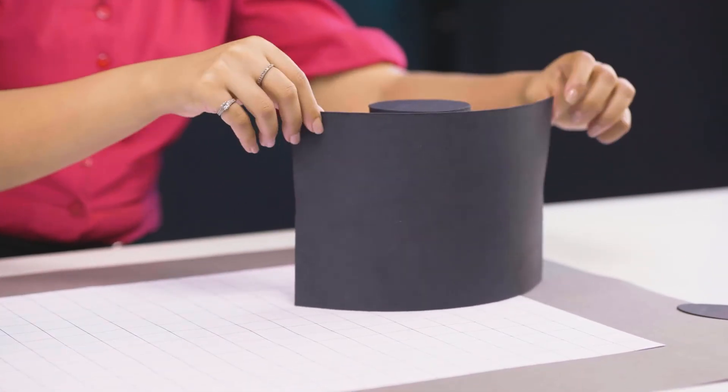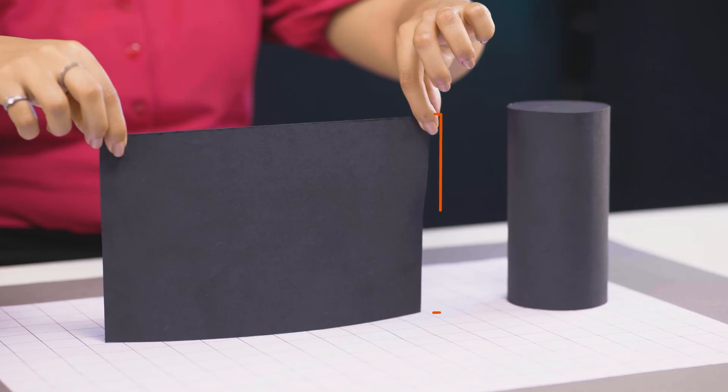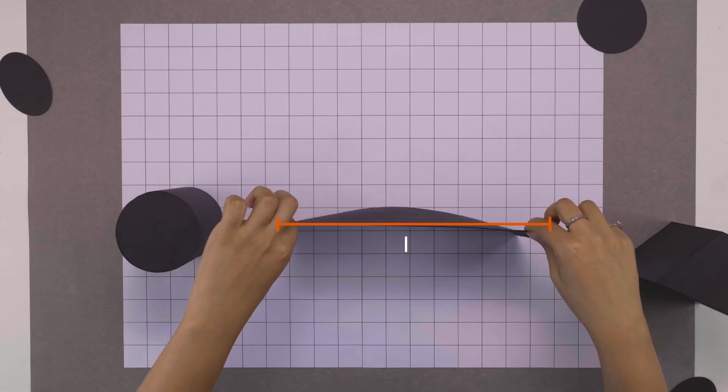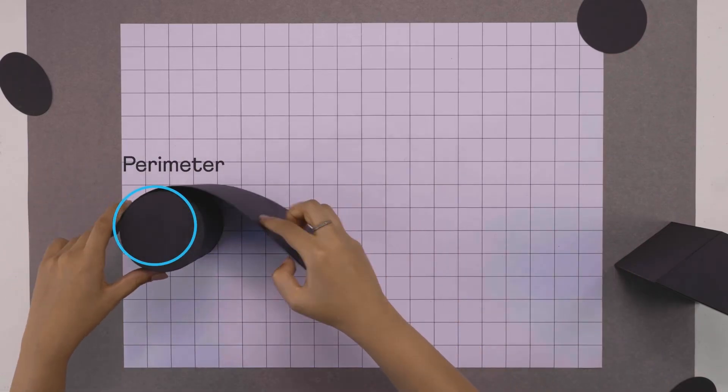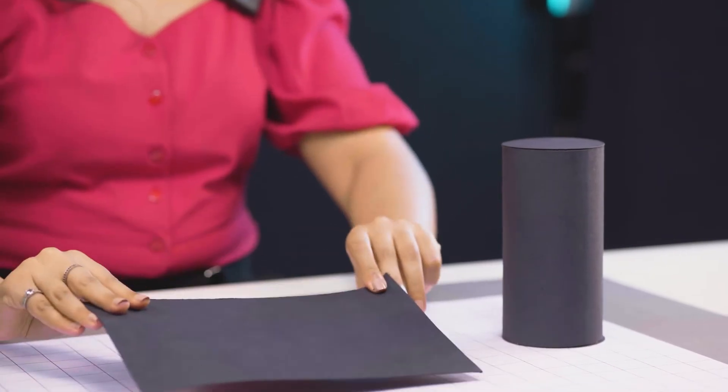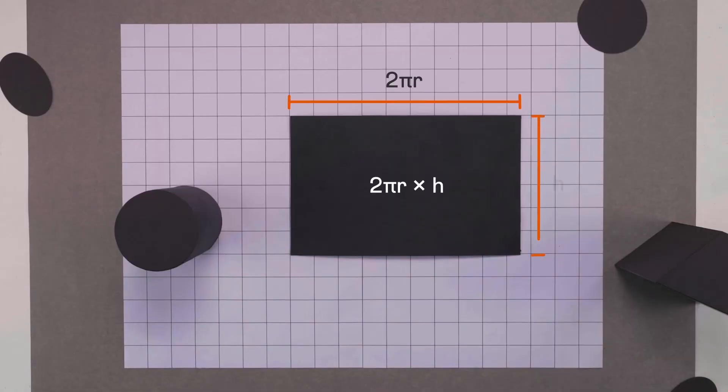If we open it up, it turns into a rectangle. Its width must equal the height of the cylinder and its length equals the perimeter of the circle, that's 2 pi r. So its area is 2 pi r times h.